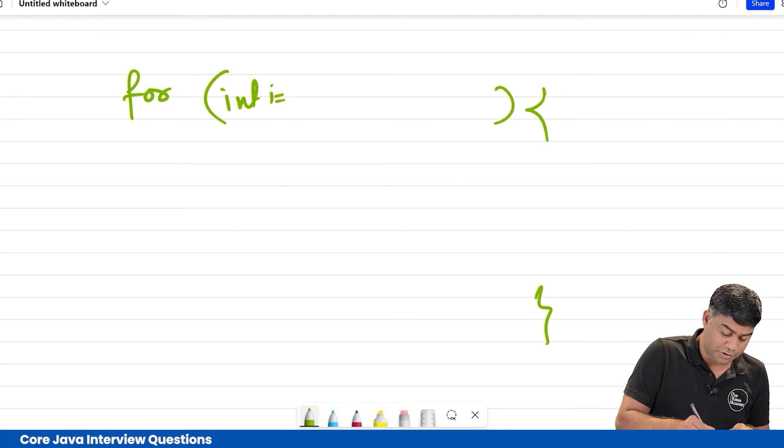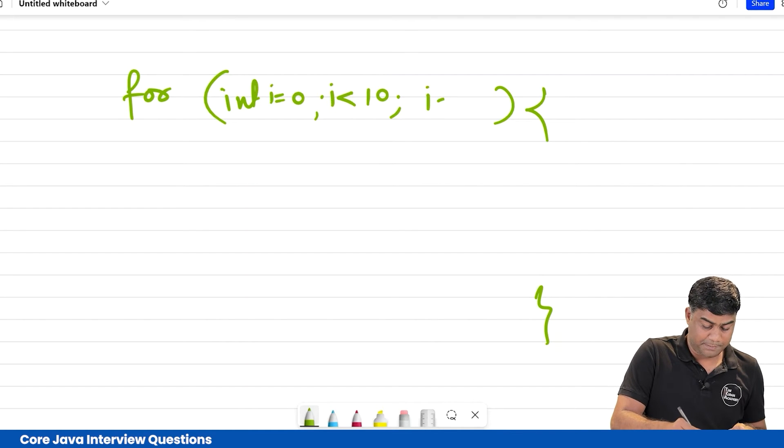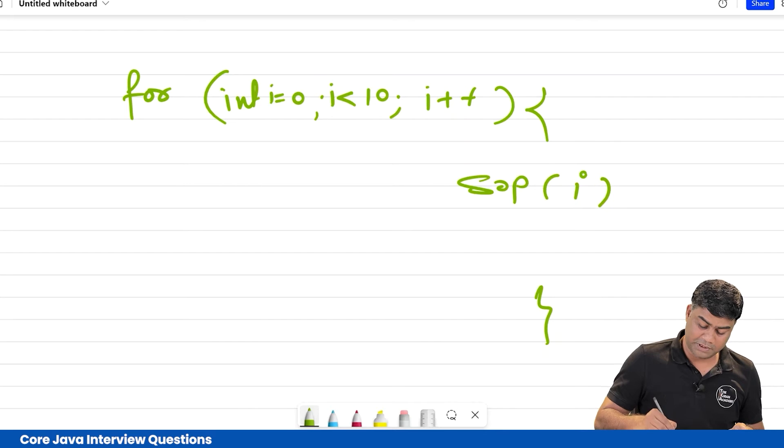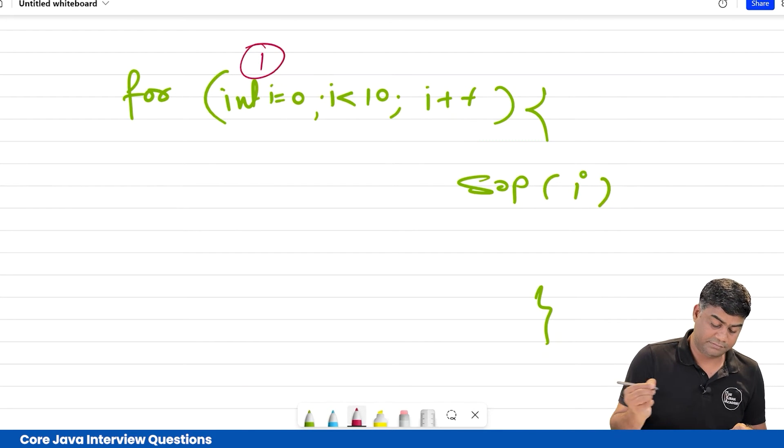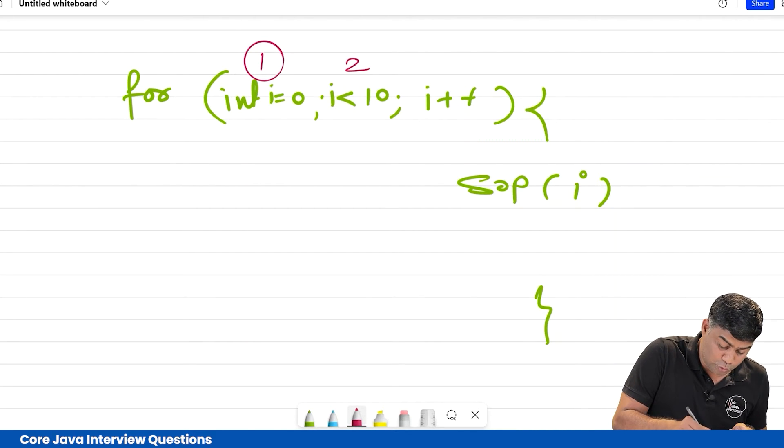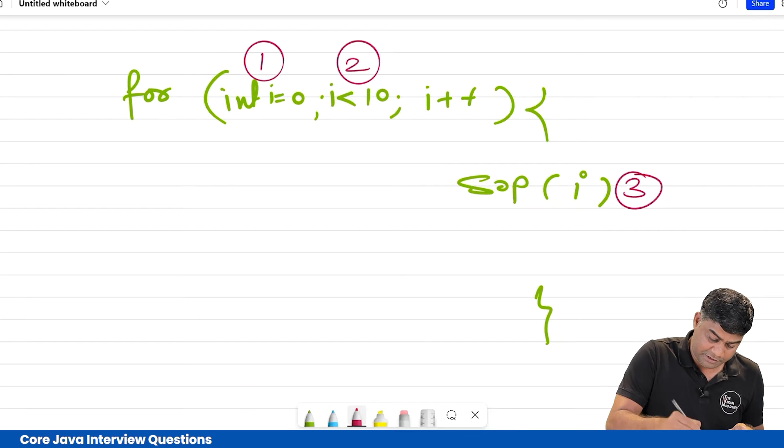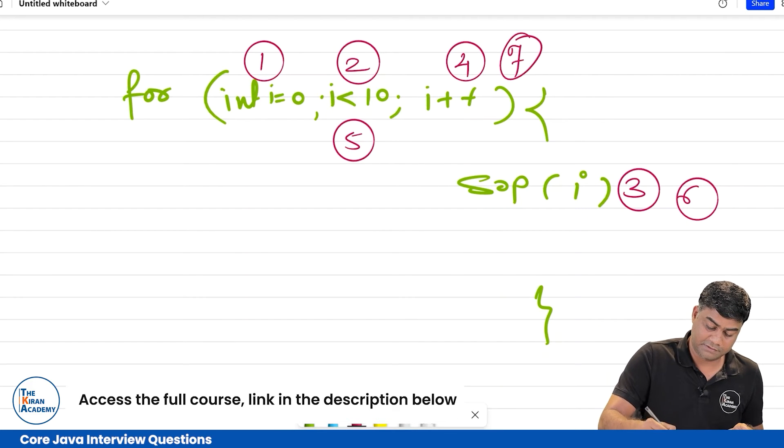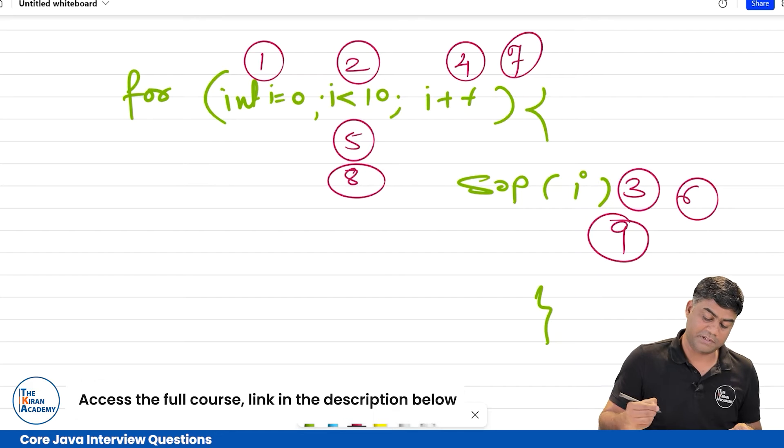Int i equals 0, i less than 10, i plus plus, sop. So what will be the sequence here? Number one, number two, number three, number four, number five, number six, number seven, number eight, number nine.